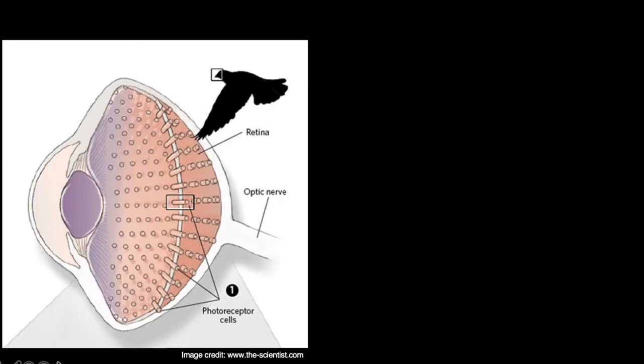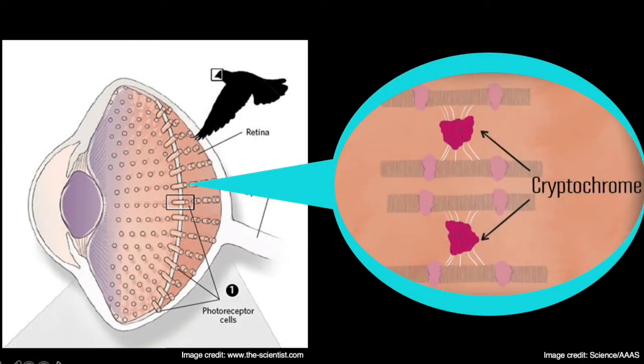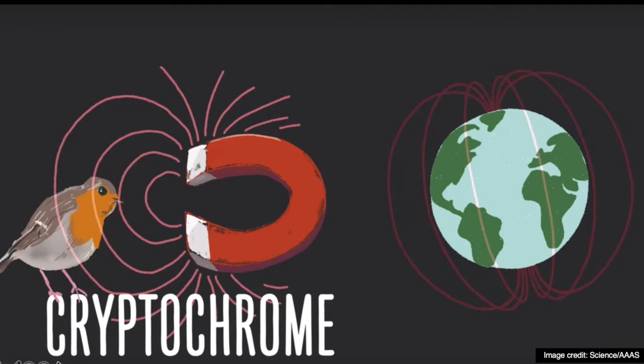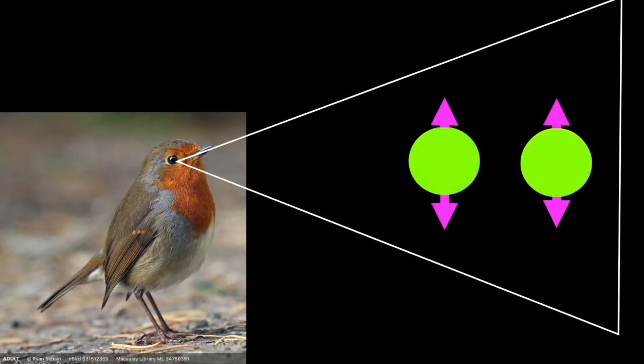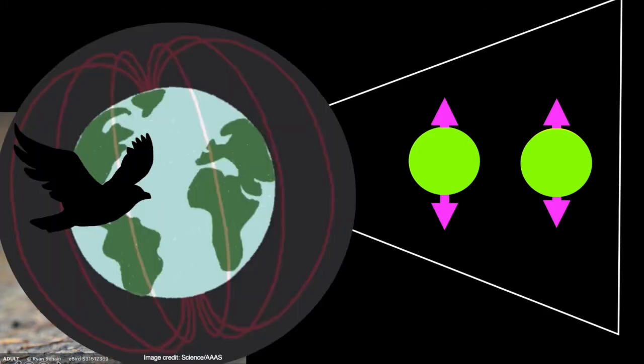That happens inside a type of light-detecting protein called a cryptochrome found in the bird's eye. Scientists think that certain types of cryptochromes can undergo chemical reactions that could make them sensitive to the Earth's magnetic field. When the cryptochrome is activated by light, a chemical reaction happens that results in pairs of electrons that have special quantum properties. First, they have a property called spin that can be pointed up or down. But spin can also be up or down at the same time. And these pairs of electrons are also linked or entangled, meaning they have a special connection to each other. And these weird quantum states of the electrons can be affected by the Earth's magnetic field.